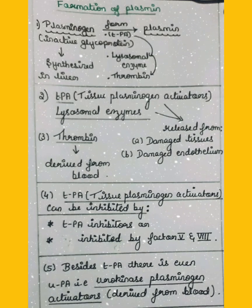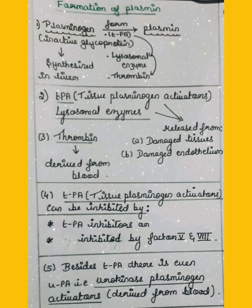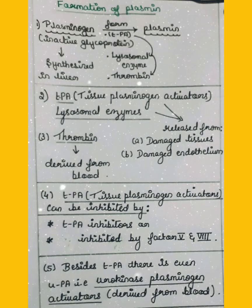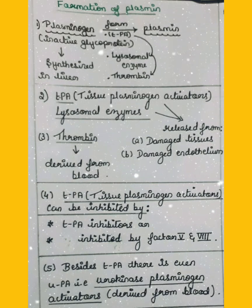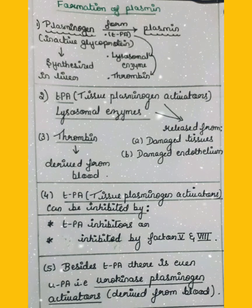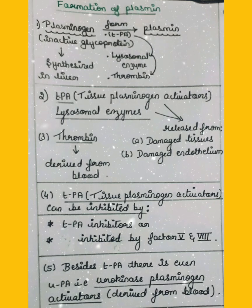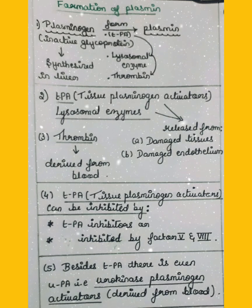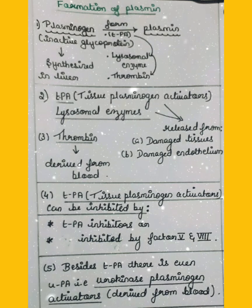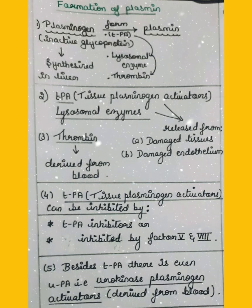TPA — tissue plasminogen activator — can be inhibited by TPA inhibitors, or it can be inhibited by factor V and factor VIII. Besides TPA, there is another plasminogen activator: UPA, that is urokinase plasminogen activator, which is derived from the blood.